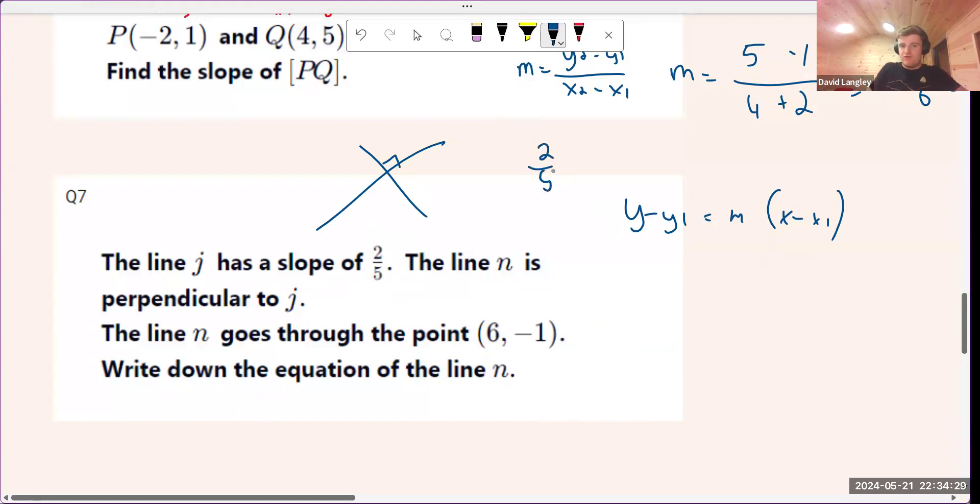We have 2 over 5. We want to go to a perpendicular slope. We flip the fraction 5 over 2, and then we change the sign. And so our new slope is going to be minus 5 over 2.